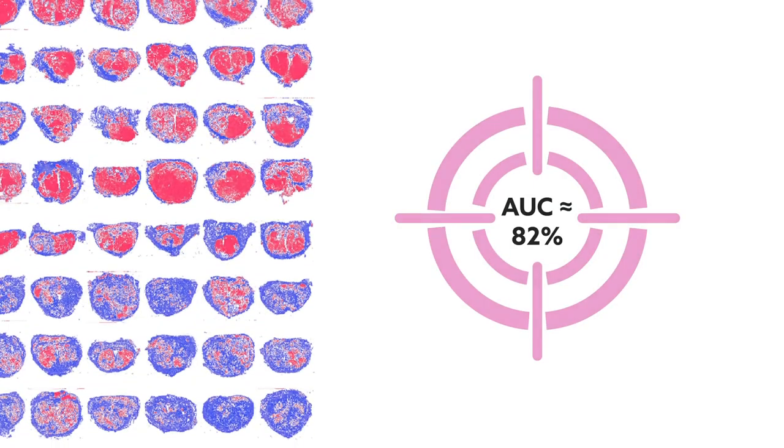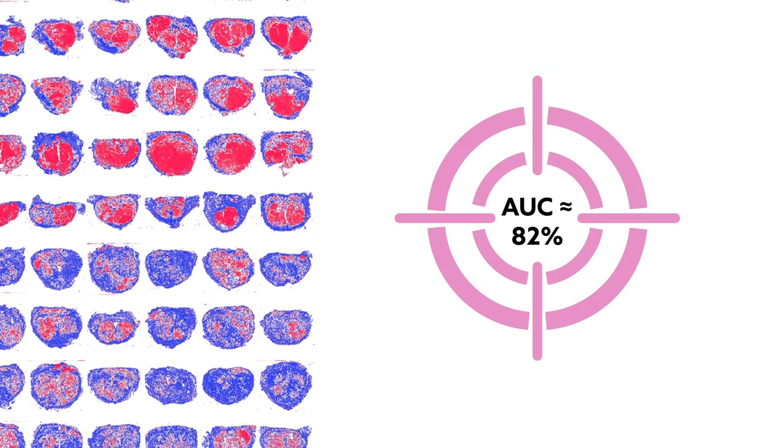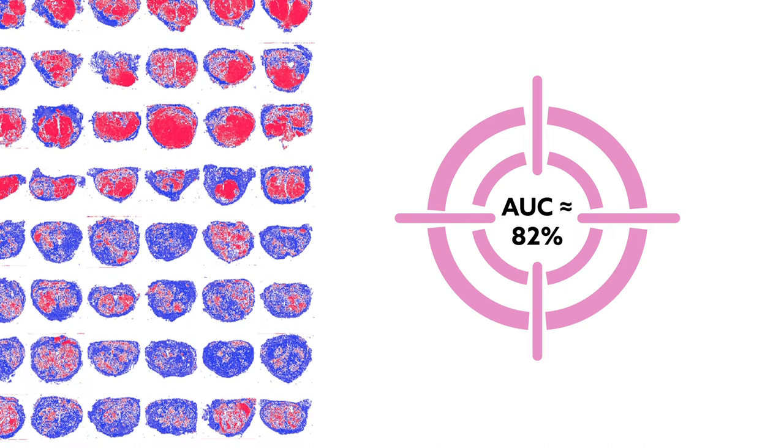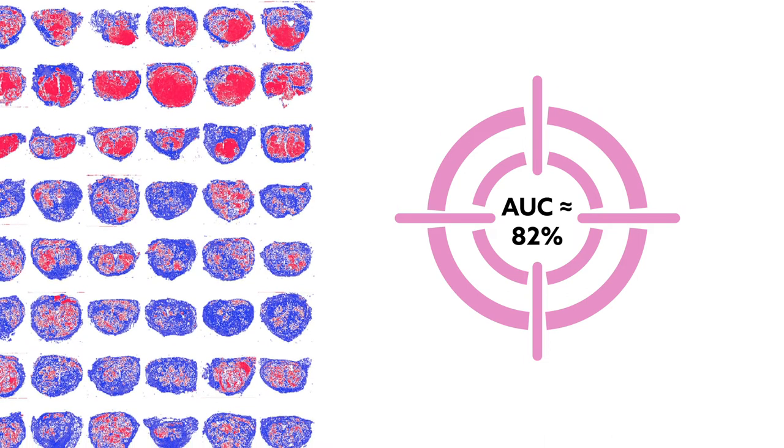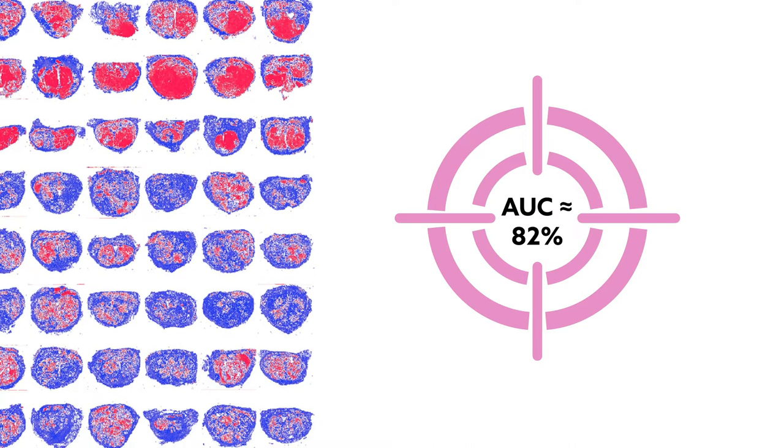The RIKIN team's algorithm scored an impressive 82%. That result suggests that adding an AI step to the clinic could help doctors decide whether a patient needs additional treatments or simply needs to be monitored.